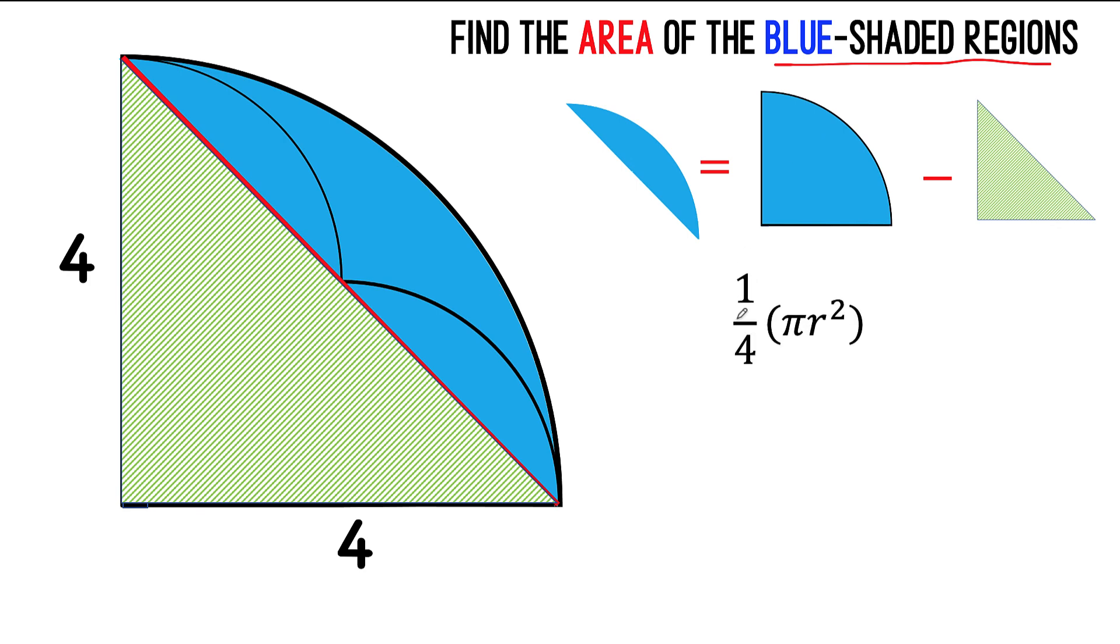The area of the quarter circle is one-fourth the area of a circle, and the area of a triangle is one-half base times height. But what is the radius of the semicircle? Well, the radius is four units, so this becomes one-fourth pi, r is now four, then square it.